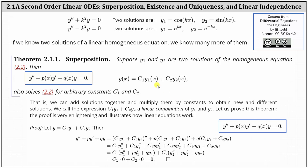This brings us to the theorem on superposition. Suppose y₁ and y₂ are two solutions of the homogeneous equation 2.2, shown here in the blue box. Then y(x) = c₁·y₁(x) + c₂·y₂(x) also solves the differential equation for arbitrary constants c₁ and c₂. That is, we can add solutions together and multiply them by constants to determine new and different solutions. We call the expression c₁·y₁ + c₂·y₂ a linear combination of y₁ and y₂.